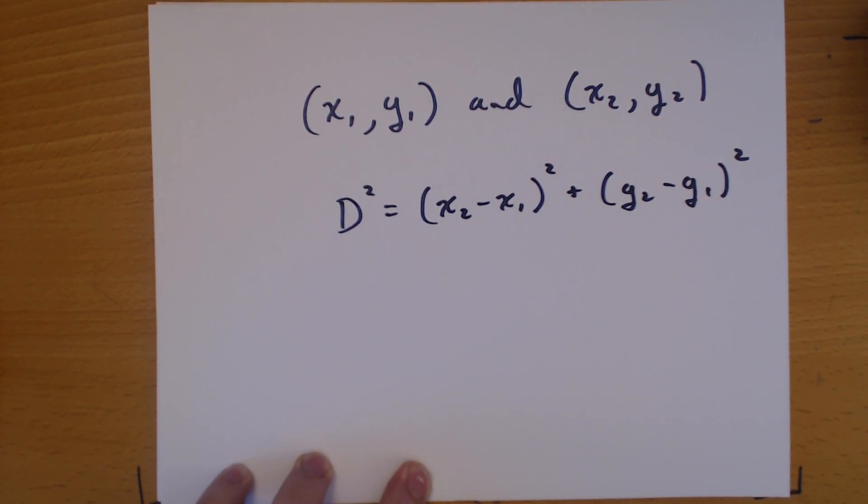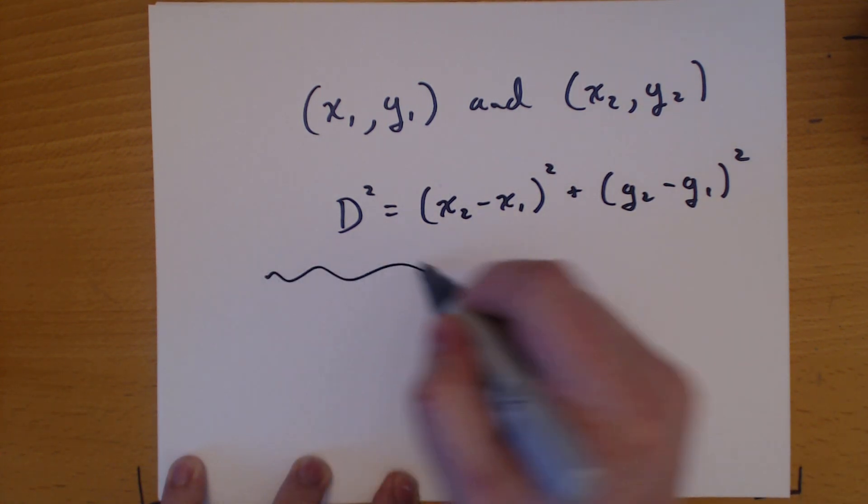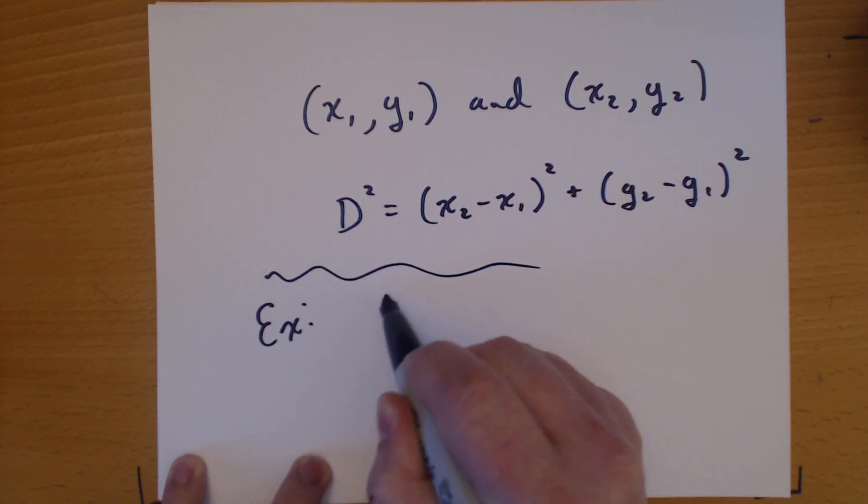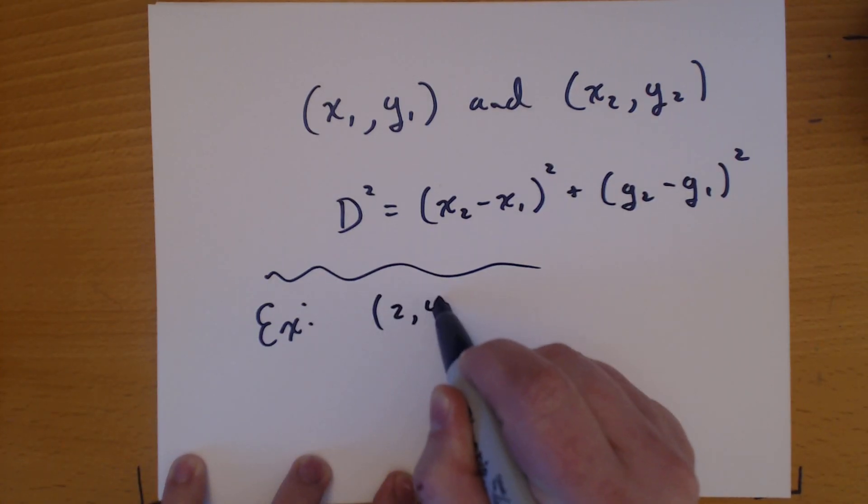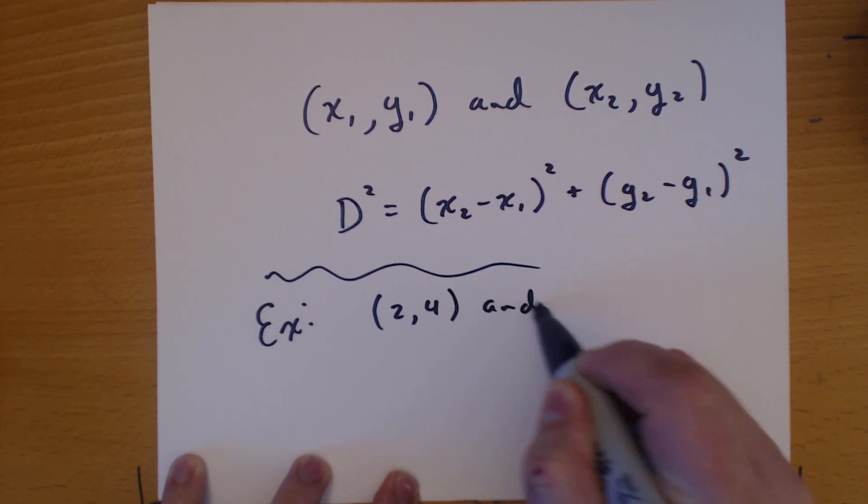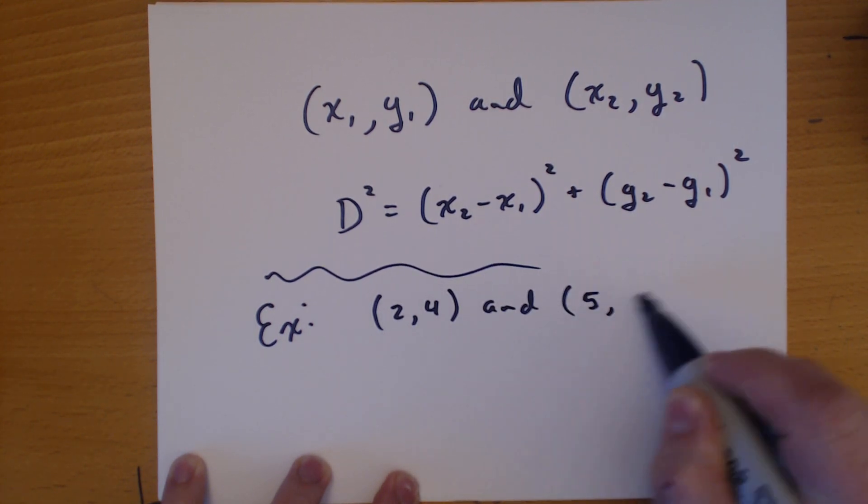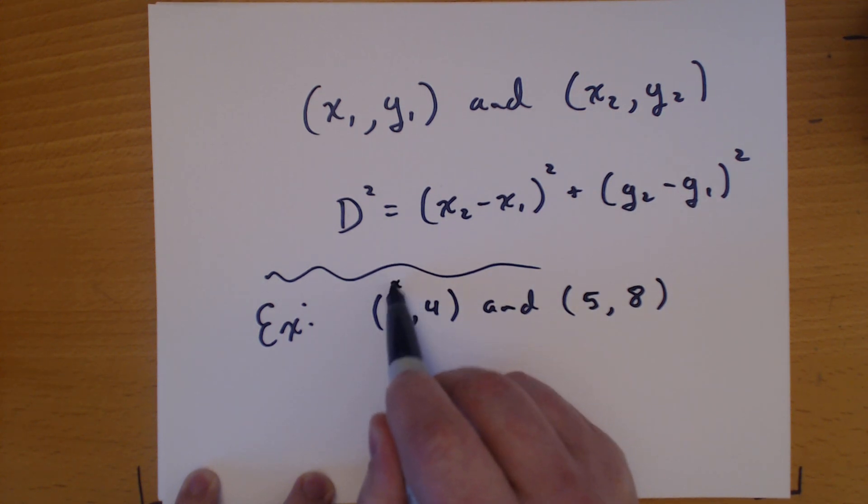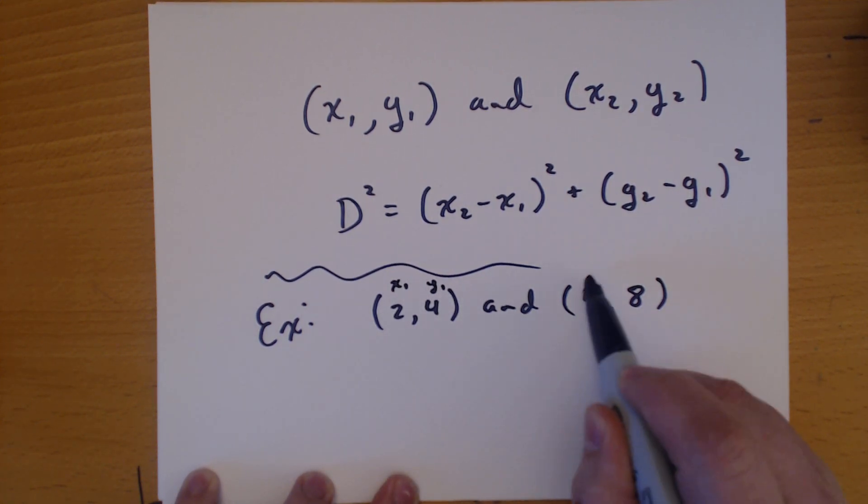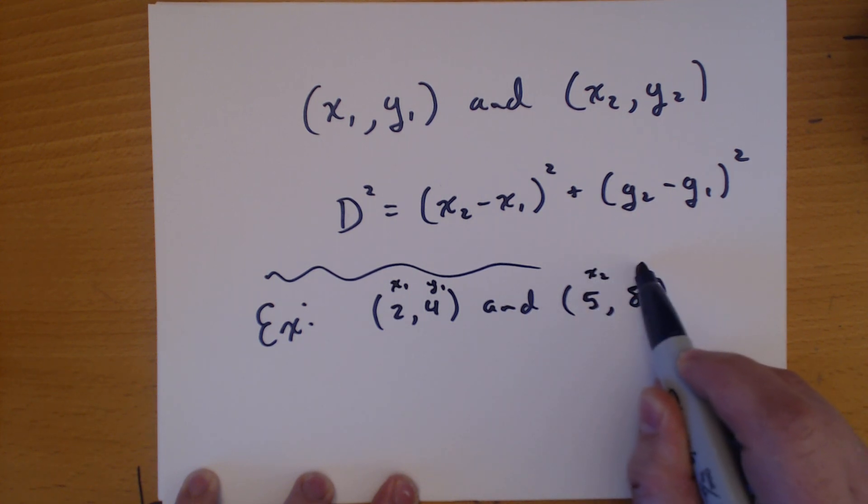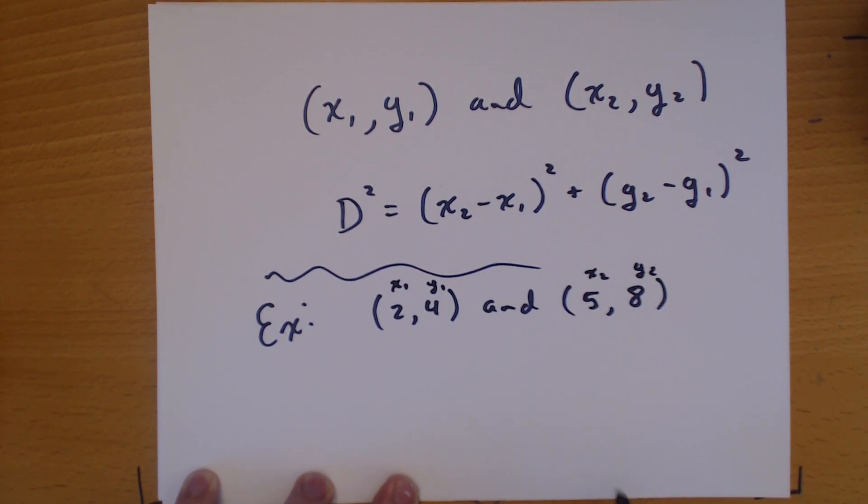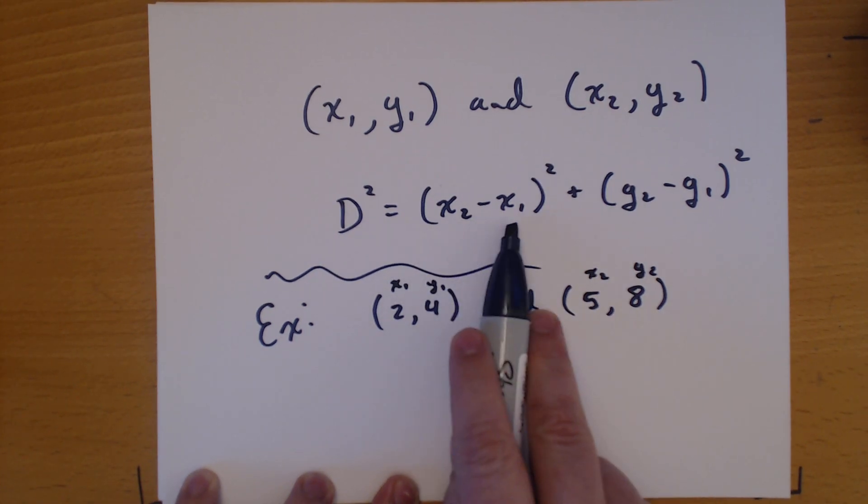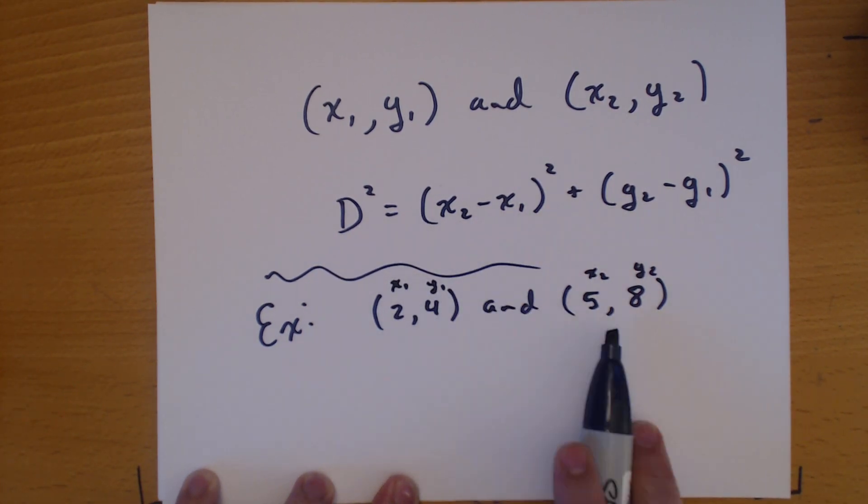Now that's fine and good if all you're looking for is a formula, but let's do an example. So this is going to be my x1 and my y1, my x2 and my y2. And now the formula says take the x's and take the second one and subtract the first one.